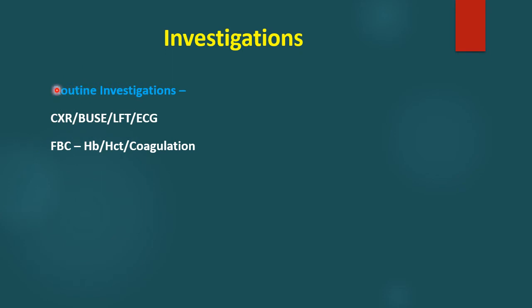Investigations for lower GI bleeding include routine investigations: chest x-ray, renal and liver function tests, ECG. Especially important are hemoglobin, hematocrit, and coagulation studies — particularly prothrombin time, clotting time, and bleeding time — which are very important in such bleeding cases.